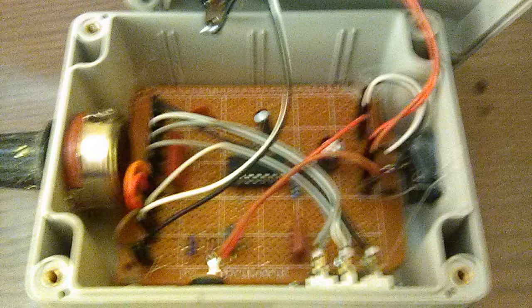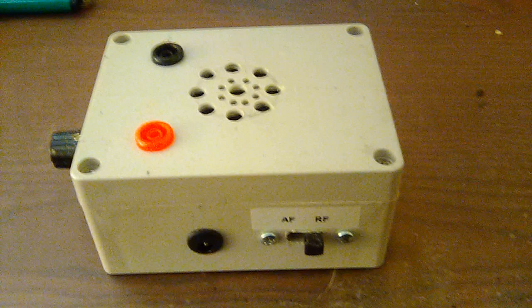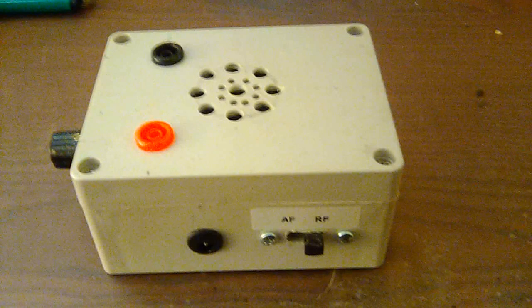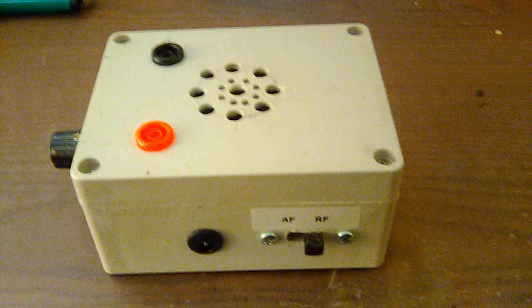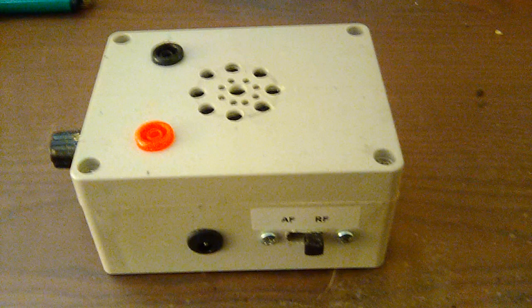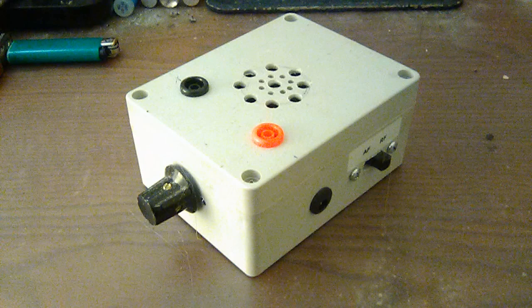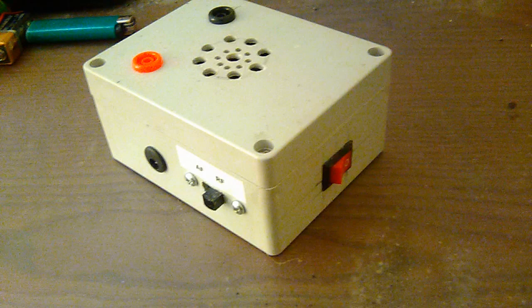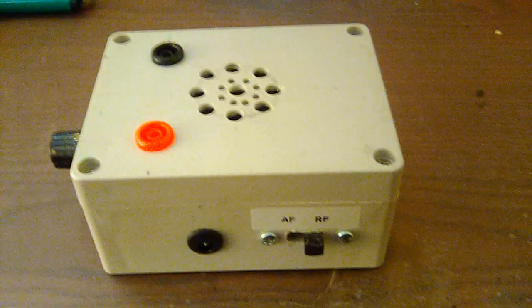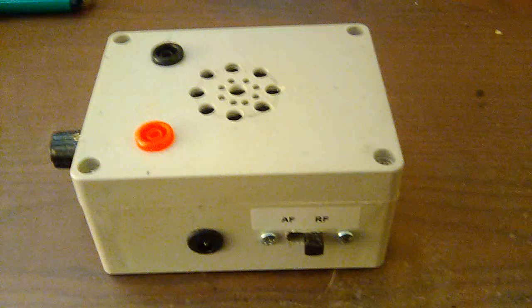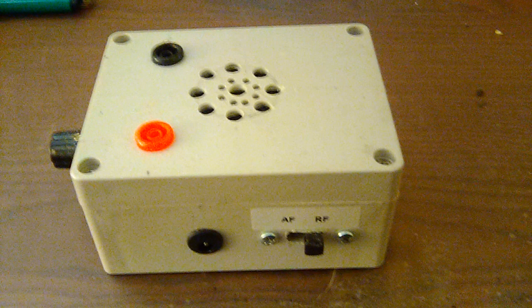The one thing I did when I put it together is I put banana jacks on it. This way I can use any kind of probes I want: little hook probes, pointed probes, or alligator clips. You have the volume control on one end, the on/off switch on the other. On the front you have your RF and AF switch and also the plug to plug a nine-volt battery into it. I made it battery powered.